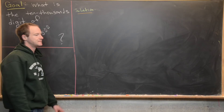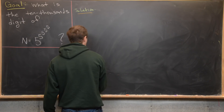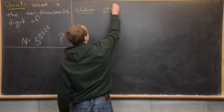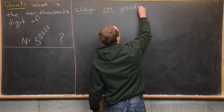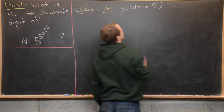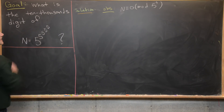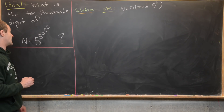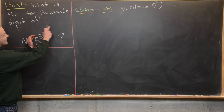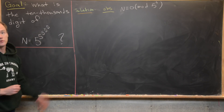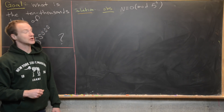Now we're ready to look at our solution. We'll start by reducing N modulo five to the five, and we can do that pretty quickly. As an observation: N is congruent to zero modulo five to the five. Why? Because five to the five to the five to the five to the five is clearly a multiple of five to the five — it's five to the five multiplied by itself some huge number of times, but it's still a multiple of five to the five.